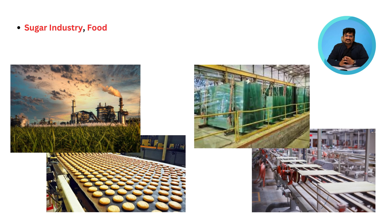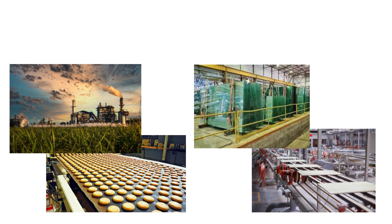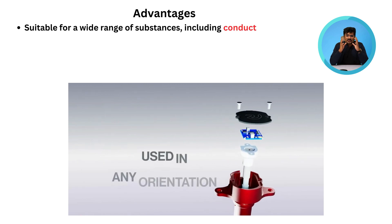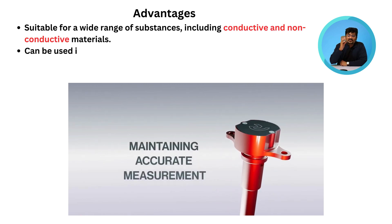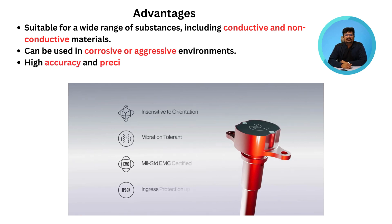Capacitance level sensors find application in various industries for measuring the level of liquids, powder, and bulk solids, such as the sugar industry, food processing, and glass and ceramic industry. Main advantages include being suitable for a wide range of substances including conductive and non-conductive materials, and the ability to be used in corrosive and aggressive environments with high accuracy and precision in level measurement.